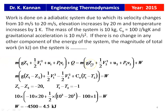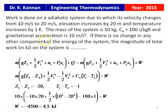Using the steady flow energy equation: M[gZ1 + ½V1² + U1 + P1V1] + Q = M[gZ2 + ½V2² + U2 + P2V2] + W. We are given change in elevation (20 m), initial velocity (10 m/s), final velocity (20 m/s), and change in temperature (1 K). There is no information about pressure and volume, so the flow energy terms P1V1 and P2V2 are dropped.